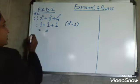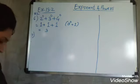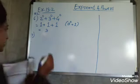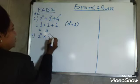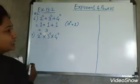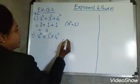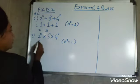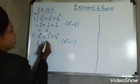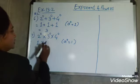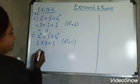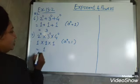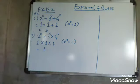Now the 7th example: 2 raised to 0 into 3 raised to 0 into 4 raised to 0. We use the same formula, A raised to 0 is equal to 1. So 2⁰ = 1, into 3⁰ = 1, into 4⁰ = 1. So 1 multiplied by 1 multiplied by 1, the answer will be 1.